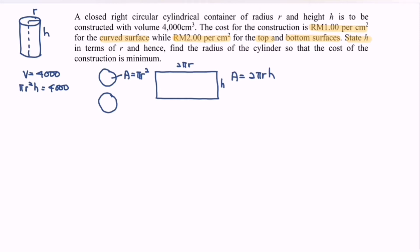The problem has two parts: first, state h in terms of R; second, find the radius of the cylinder so that the cost of construction is minimum. For the first part, from V = πr²h = 4000, we get h = 4000/(πr²).